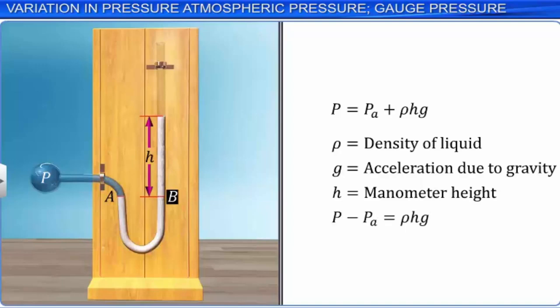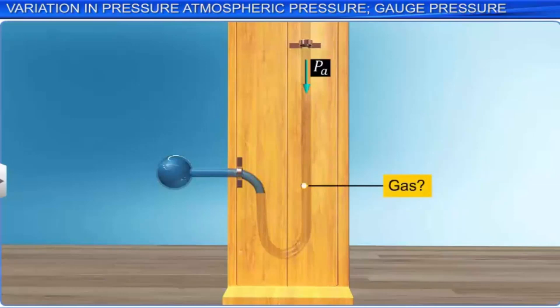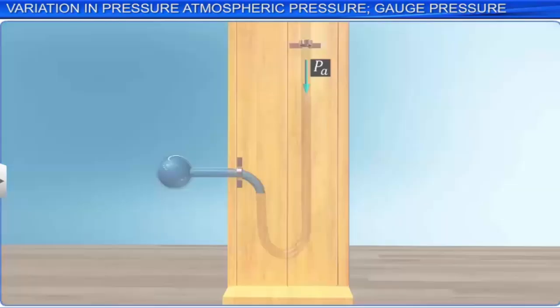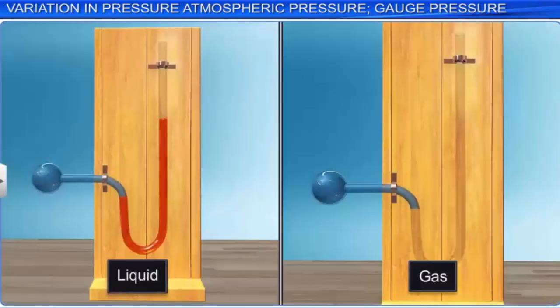What happens to an object when it is put in still water — will it float or sink? We can determine this with the help of Archimedes' principle. Archimedes' principle states that when a body is partially or completely immersed in a fluid at rest, the fluid exerts an upward buoyant force equal to the weight of the displaced fluid.